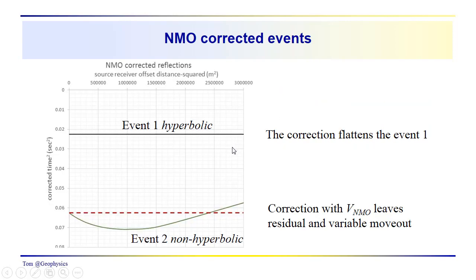So here we can see the correction for the reflection event from the base of the upper layer is perfect. It perfectly flattens it out. That event is hyperbolic. Just in this two-layer model, it's exaggerated somewhat because we have a very thick second layer compared to the first layer. But you can see where the NMO correction, this line right here, does not, obviously does not perfectly flatten out this event.